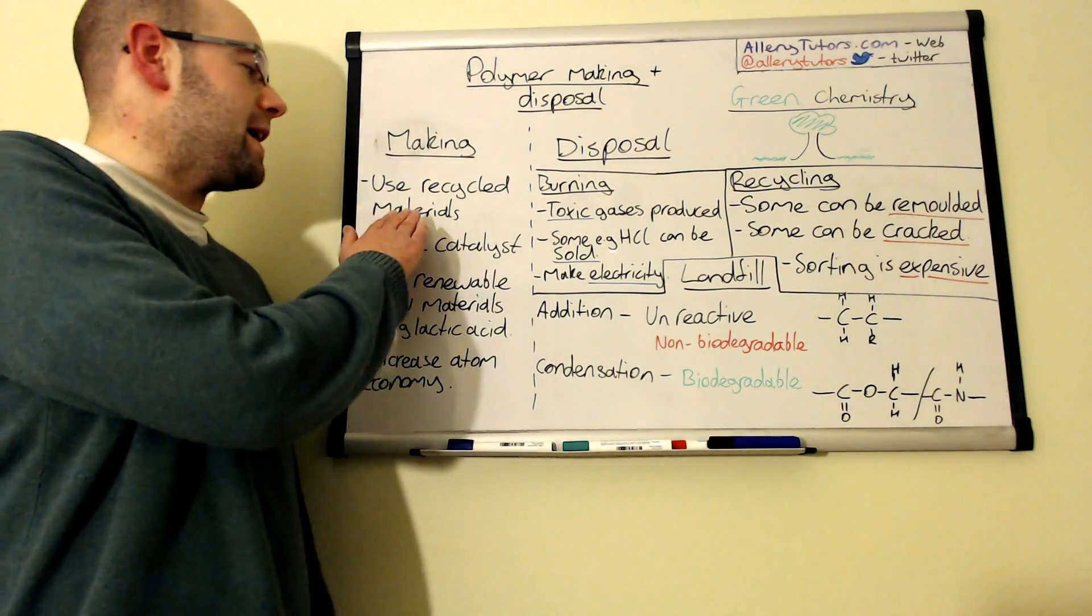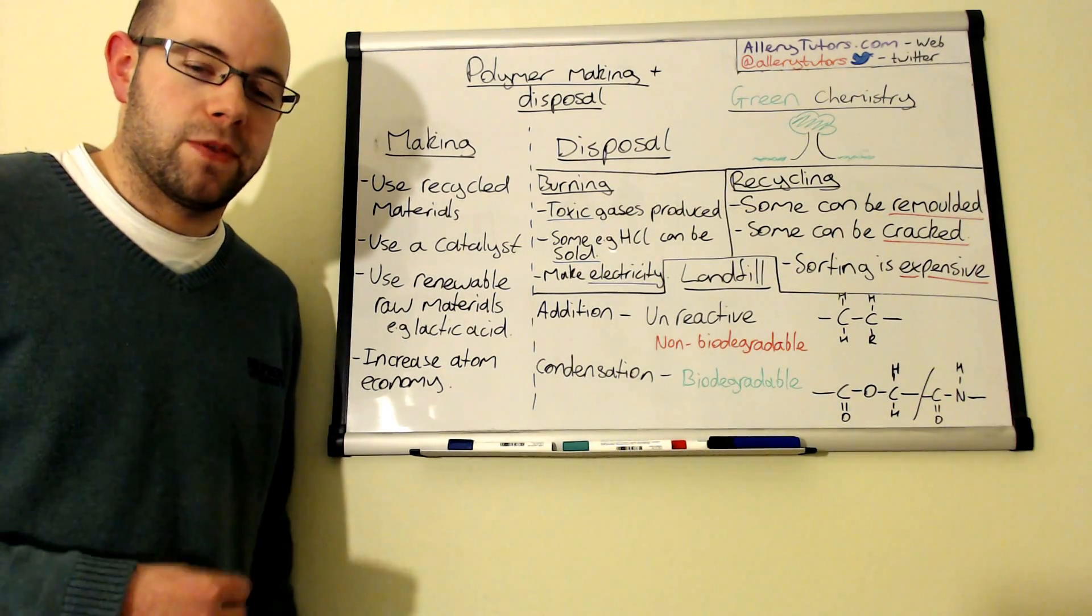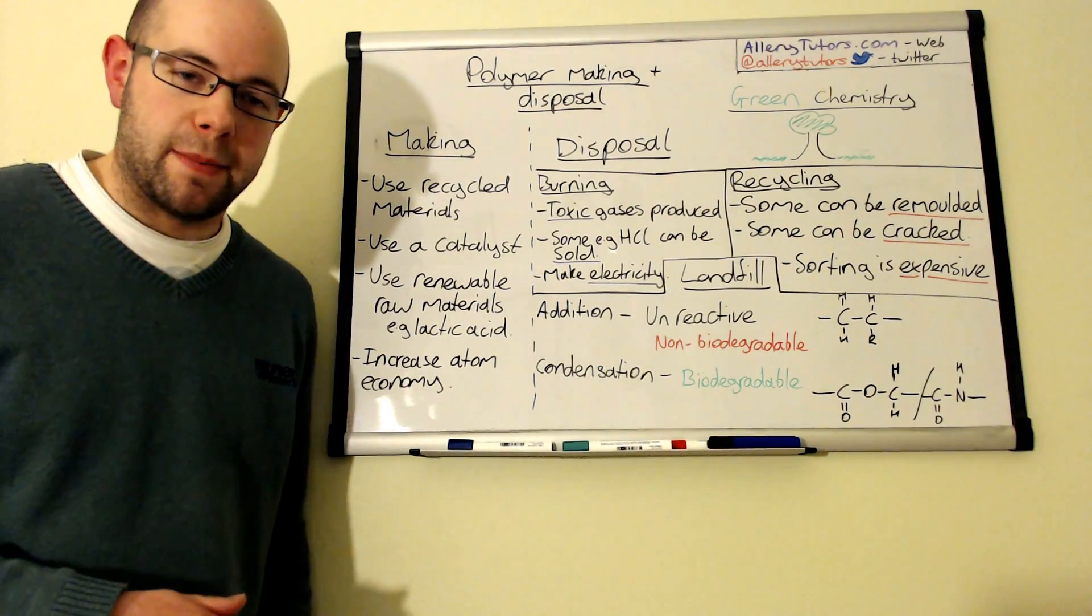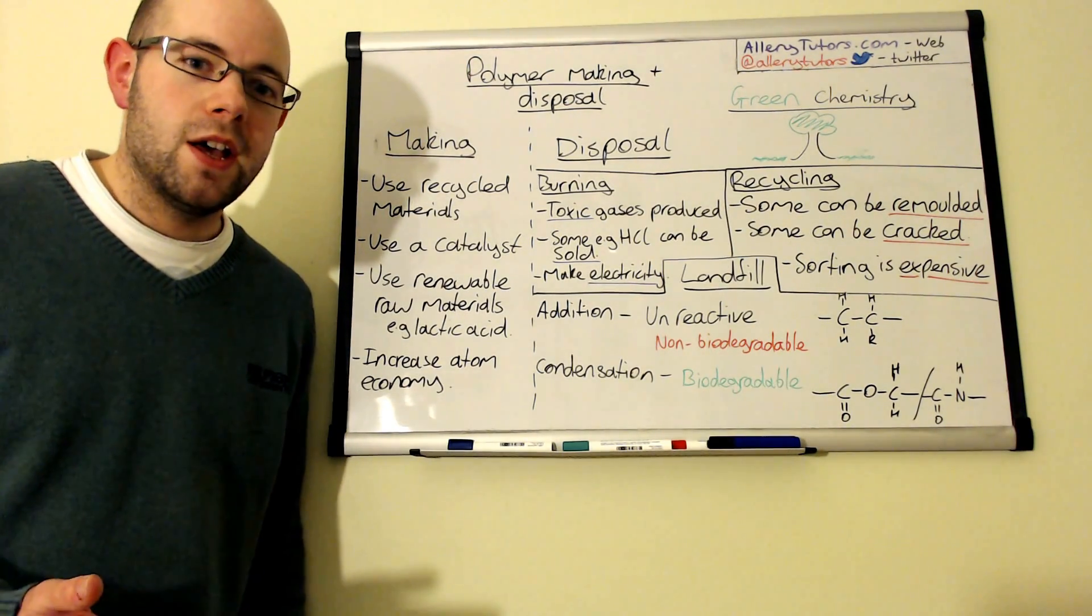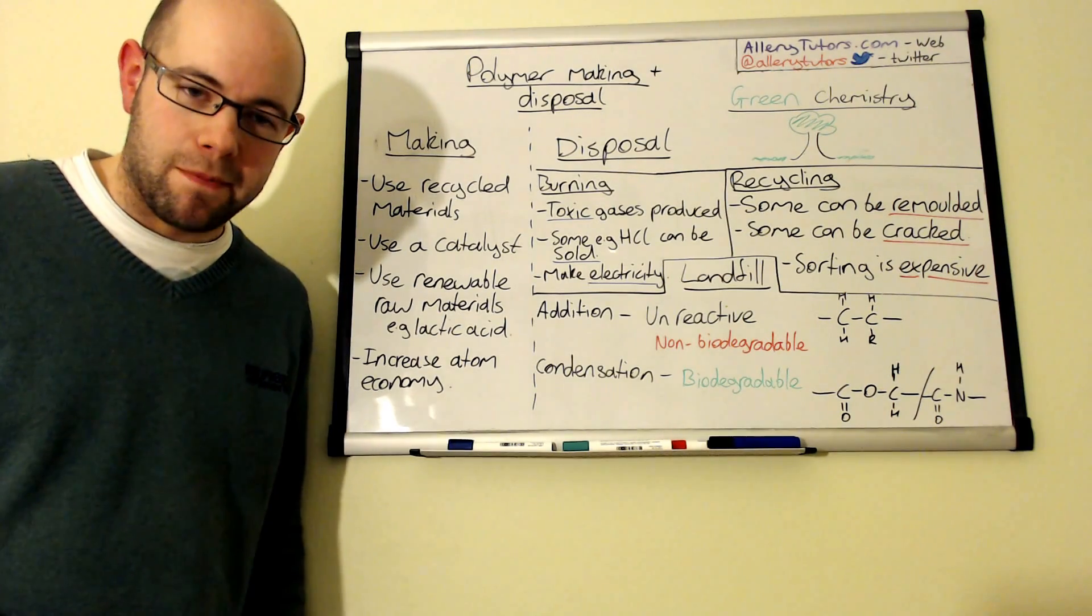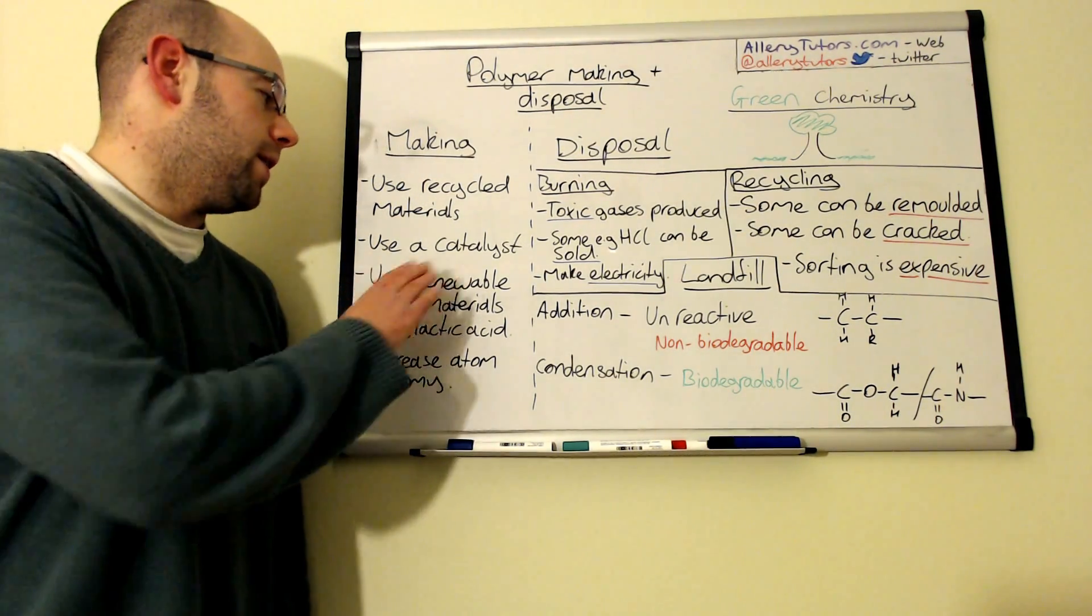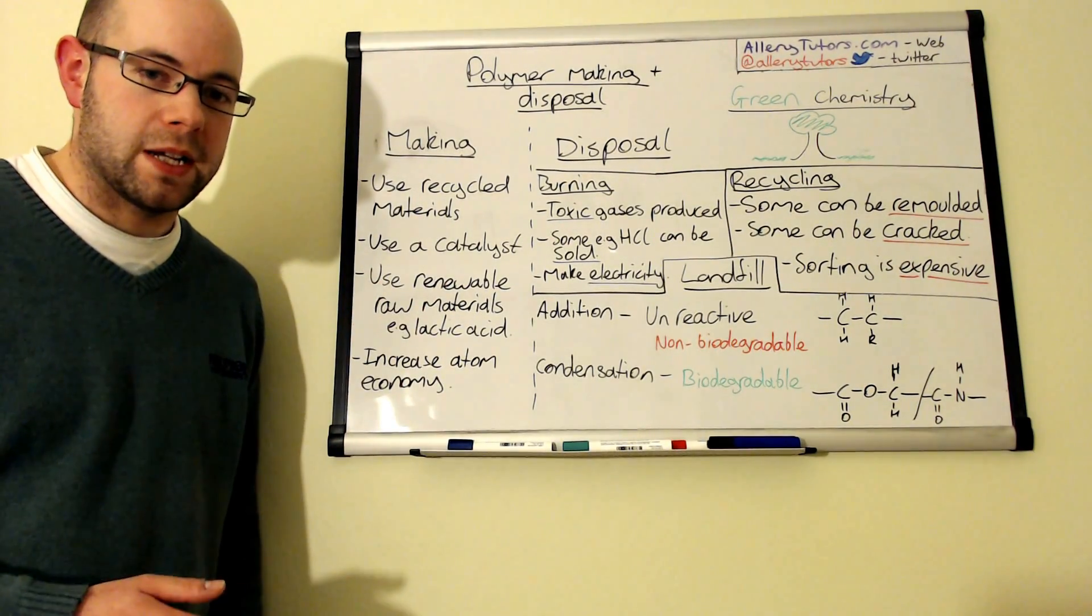Just looking at the making side, using recycled materials will save things like crude oil so you won't use as much. Using a catalyst will actually reduce the amount of energy required in the manufacturing process of the plastic, so you could either use a lower temperature which means less energy is needed to make them or you could actually speed up the rate of the reaction as well.